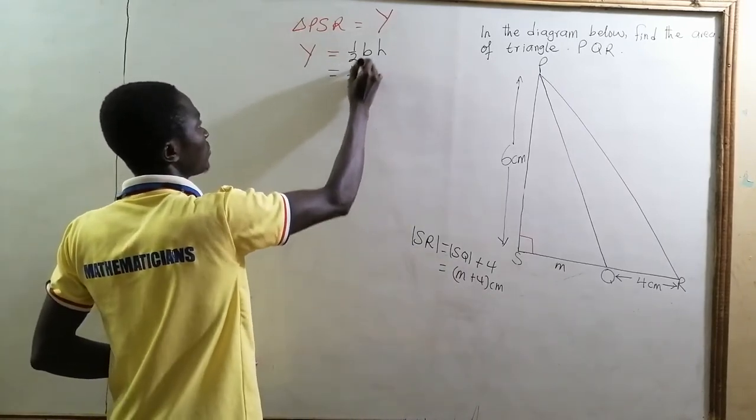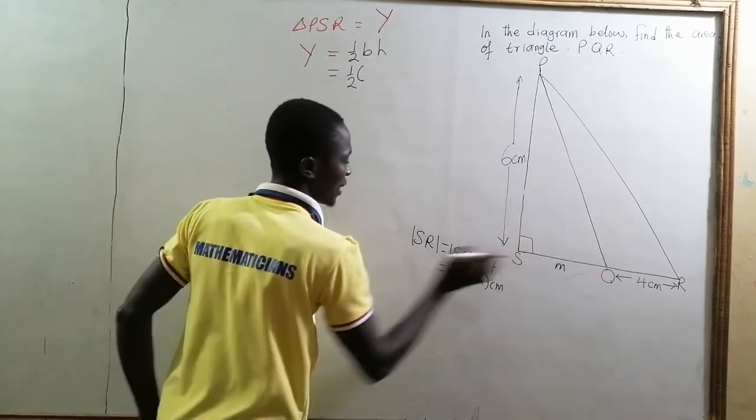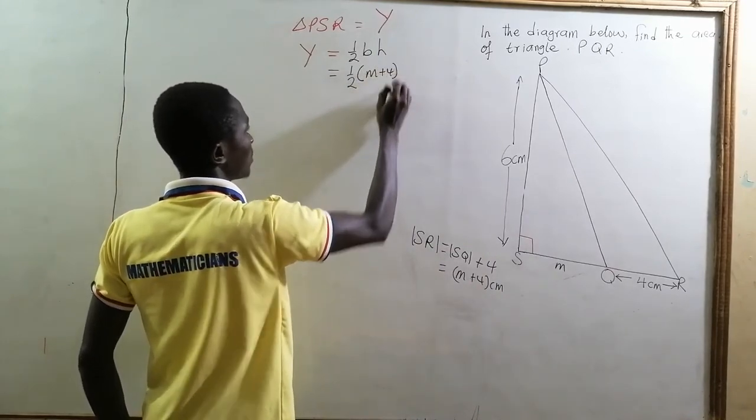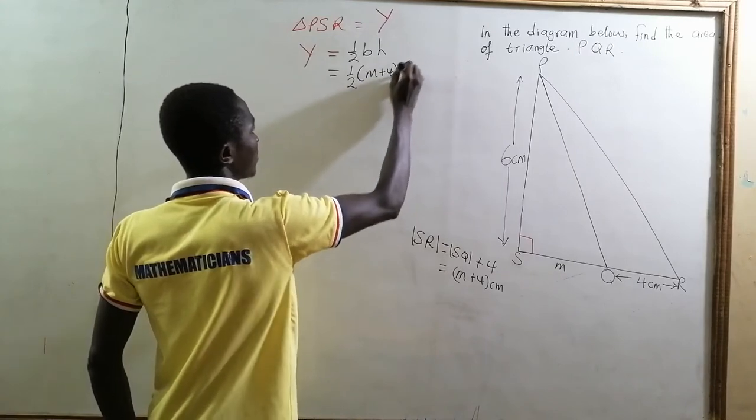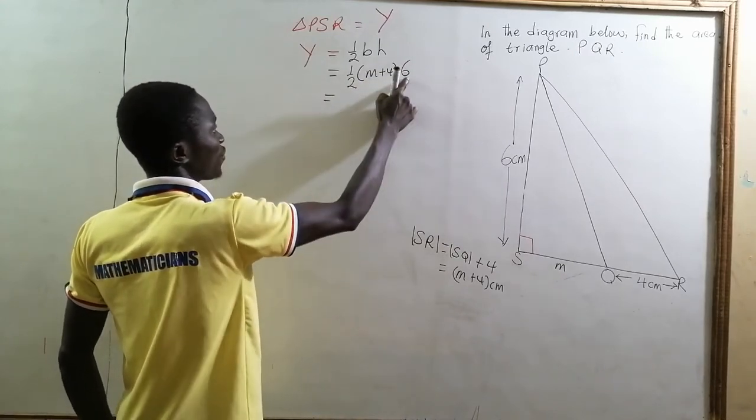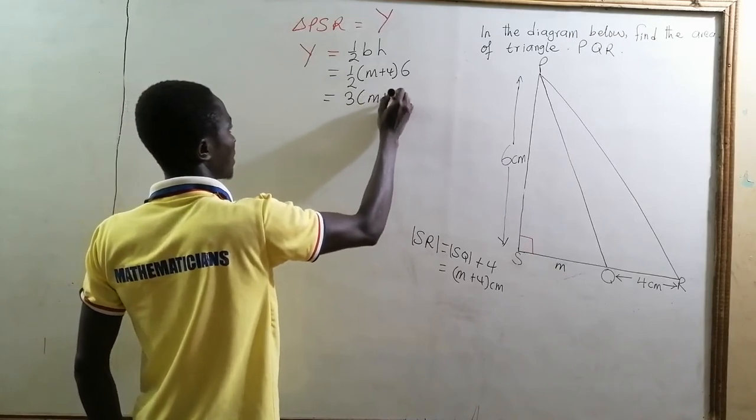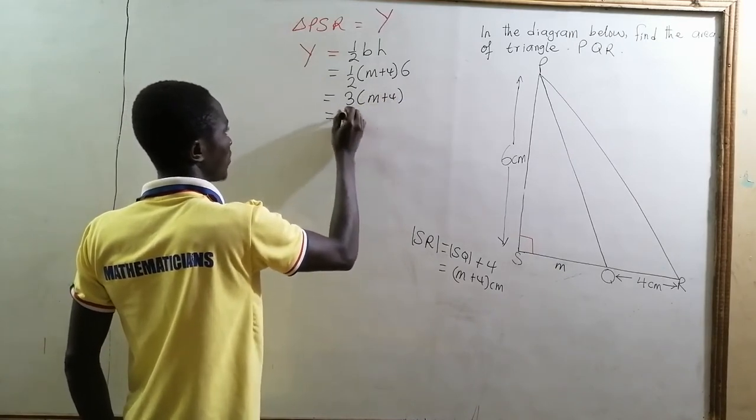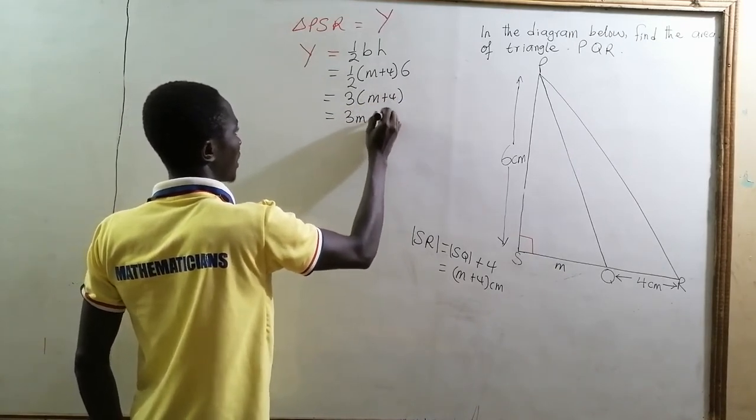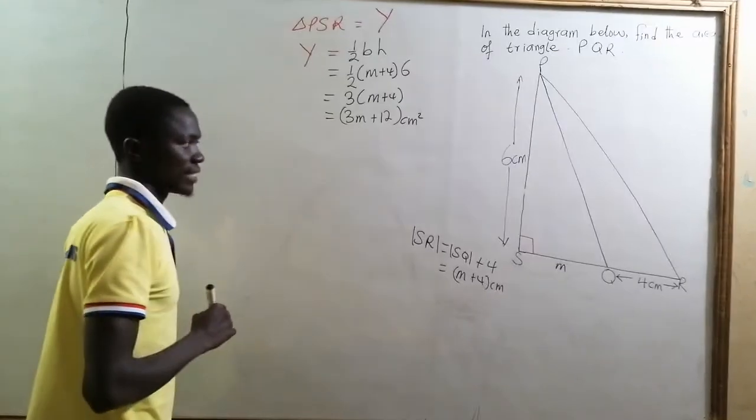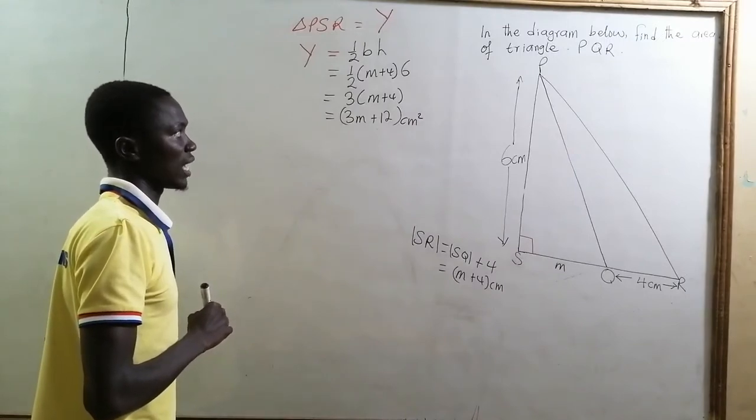So here we have half times the base length, that is SR, and it is M plus 4 times the perpendicular height 6. Half of 6 is 3, so we have 3 times M plus 4. And this will give us 3M plus 12 centimeters squared. That is the area of triangle PSR.